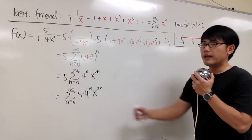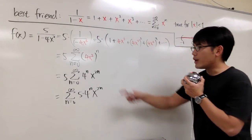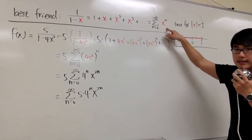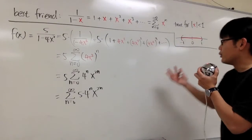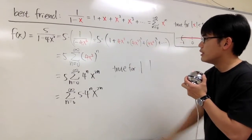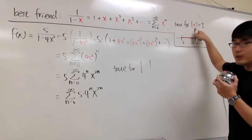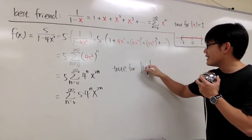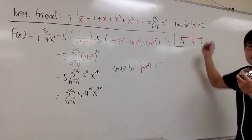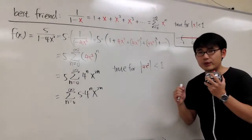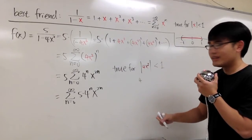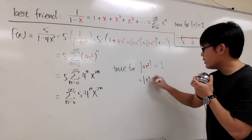Now let's talk about the radius and interval of convergence. Because we used our best friend by plugging 4x squared into x, we apply the same condition: the absolute value of 4x squared must be less than 1. We can write this as 4 times the absolute value of x squared, which is less than 1. Dividing both sides by 4 gives absolute value of x squared less than 1 over 4.